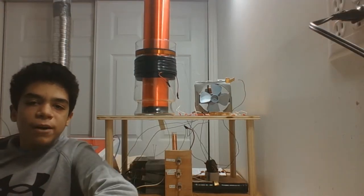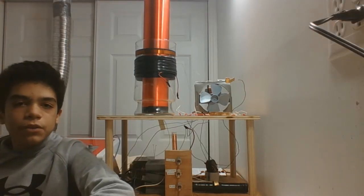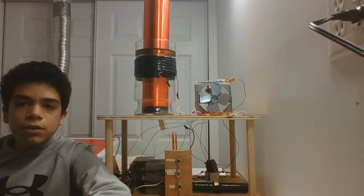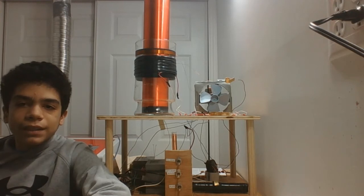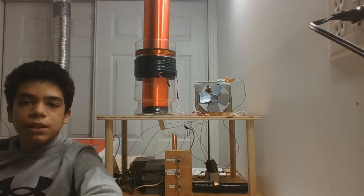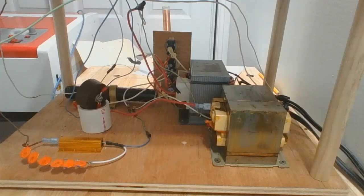For the feedback coil I simply wound 35 turns of 28 gauge enameled copper wire around the flower pot. This coil tells the vacuum tube when to stop conducting. It is important to remember that this coil must be wound in the same direction as the primary coil. Now let's talk about the oscillator circuit.